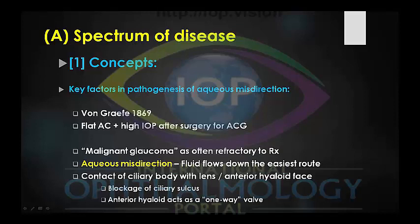For most of us, most of the time, fluid flows forward into the trabecular meshwork. However, in aqueous misdirection, the fluid is directed posteriorly. There are many possible mechanisms in aqueous misdirection, but commonly it is thought that there is contact of the ciliary body with the lens and/or anterior hyaloid face, causing a blockage at the level of the ciliary sulcus.